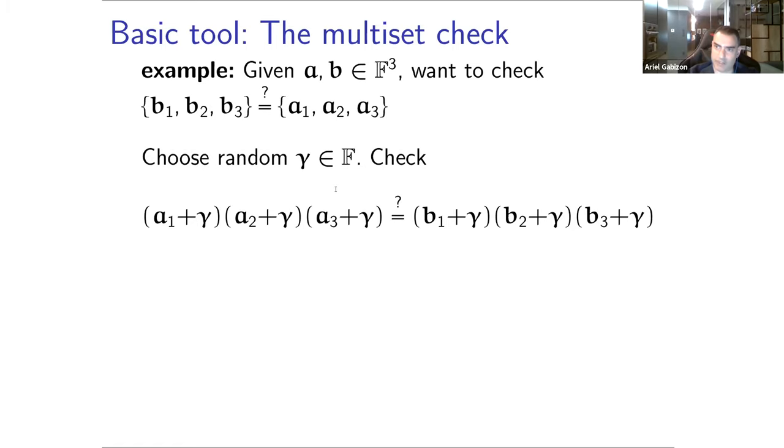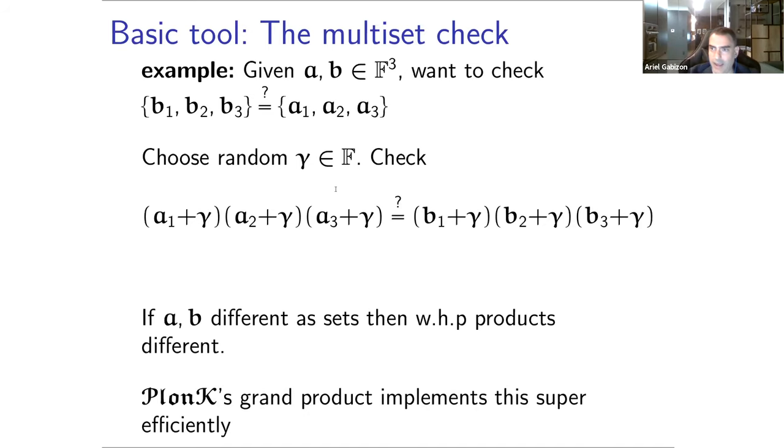How do you do this? You choose some random gamma in your field. If the A's and B's could be different, but their products could still be the same - say if the A's are one, one, one, and the B's are half one, two. But what's easy to see from the Schwartz-Zippel lemma is that if they're not the same multi-set, if you choose some random gamma and now compare the products shifted by this gamma, then with very high probability, if they're different as multi-sets, the products will be different.